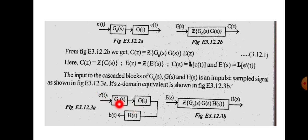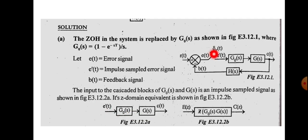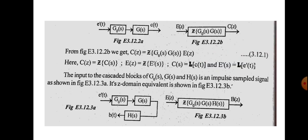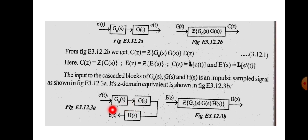Next, for the feedback path: the input is e*(t) and the output is b(t). The sampler precedes the cascade of G0(s), G(s), and H(s). So in the Z-domain, B(z) = Z{G0(s)·G(s)·H(s)} · E(z). The output b(t) corresponds to B(z) in the Z-domain.